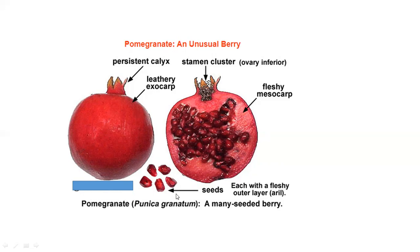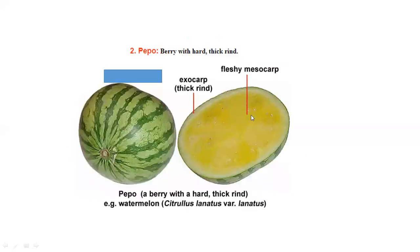When we consume the seeds, we're actually consuming the seed coat. This fleshy outer layer is called the aril. This is pomegranate, Punica granatum.